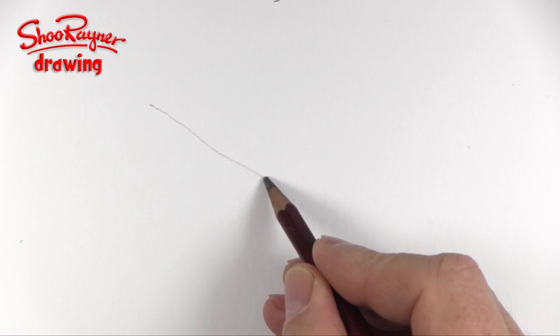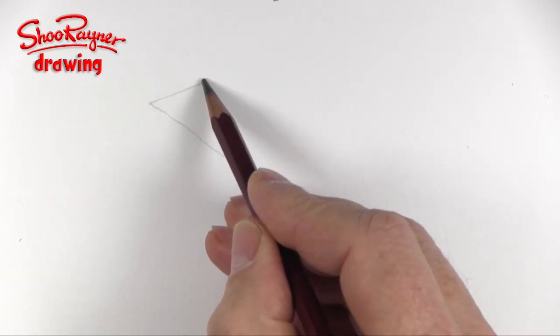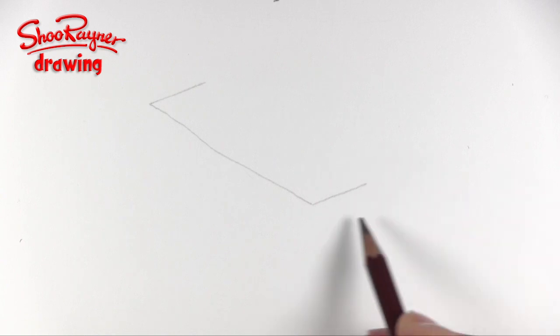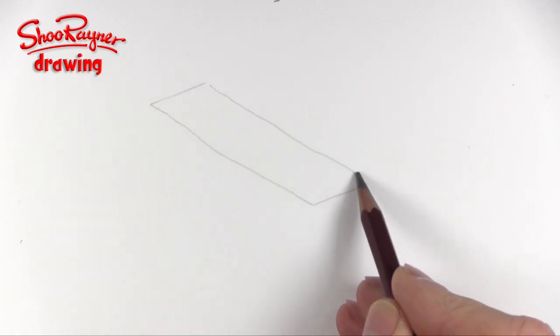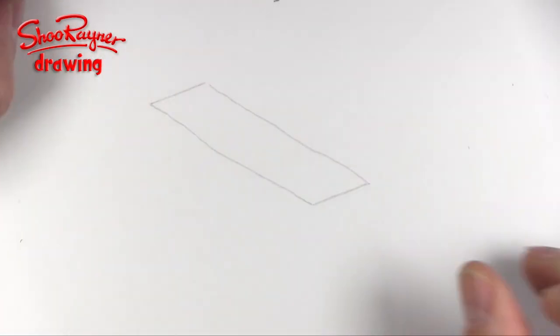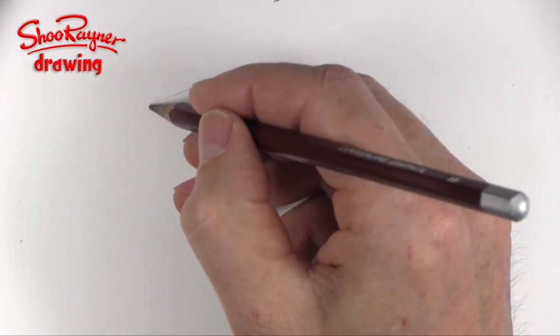I'm going to start by drawing a kind of diagonal line like that and then another going off at an angle, and another which is parallel and then parallel to this one we join them up so we've got a parallelogram.